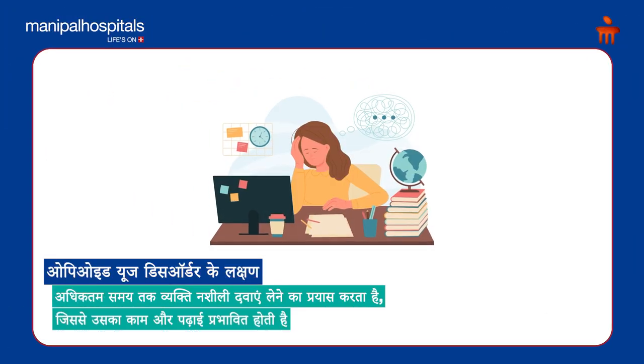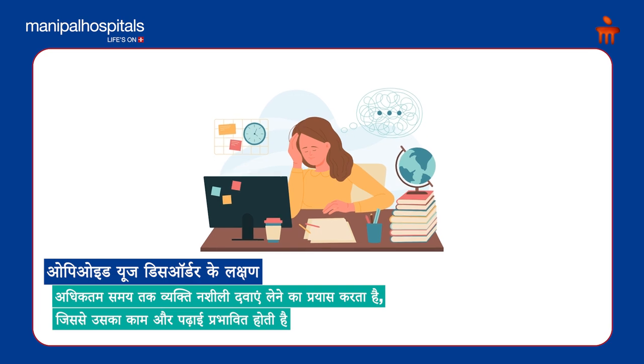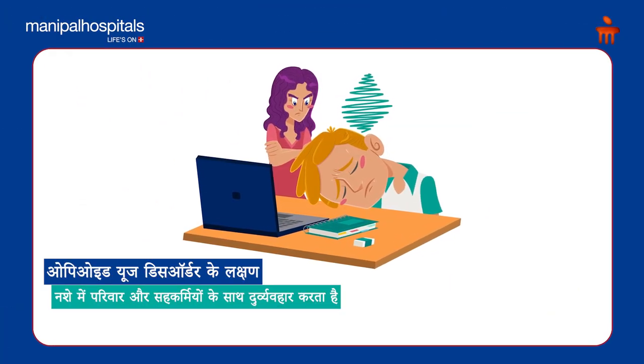There is a high possibility that withdrawal symptoms will start when the person tries to stop the drug. This is psychological and physical dependence. The patient will spend maximum time trying to procure the substance. The doses, quantity, consistency, and frequency are not reduced. When four or five of these criteria are met, we say that the patient is now having opioid dependence syndrome, or opioid use disorder is diagnosed.